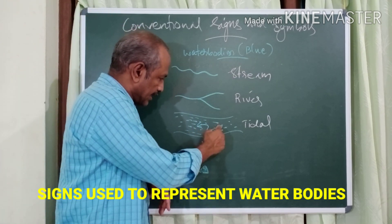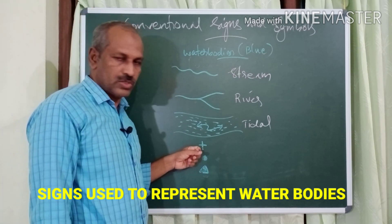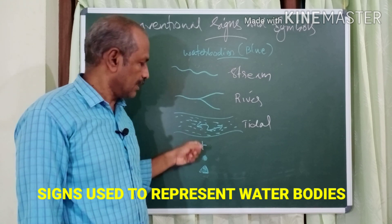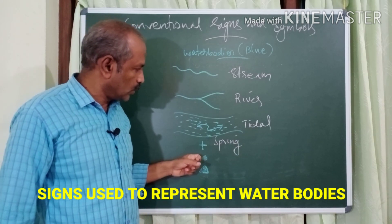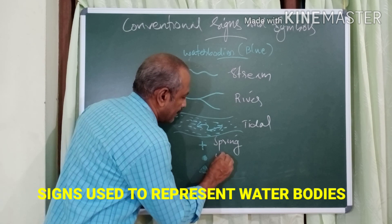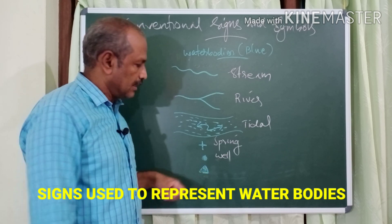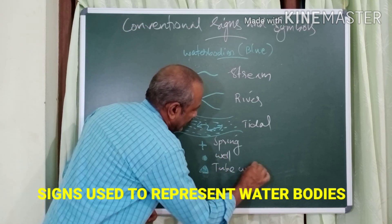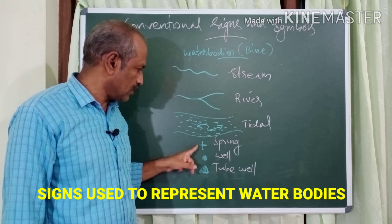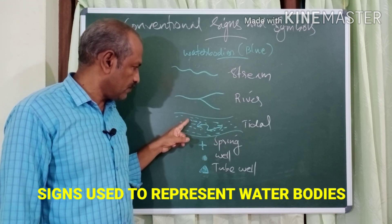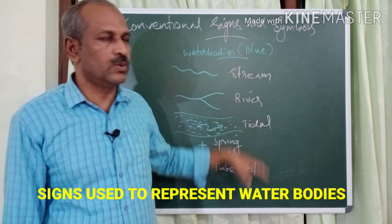The tidal river symbol includes an arrow with water marked. A blue cross represents a spring. A blue dot represents an ordinary well. A blue triangle represents a tube well. So, blue dot for ordinary well, blue cross for spring, blue triangle for tube well — all water body symbols are in blue color.